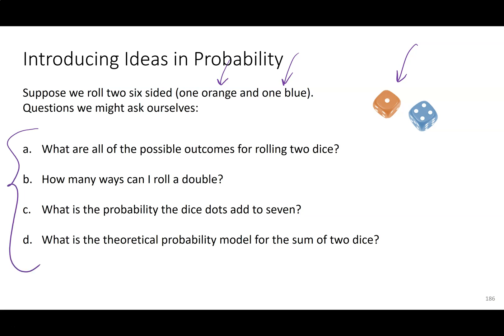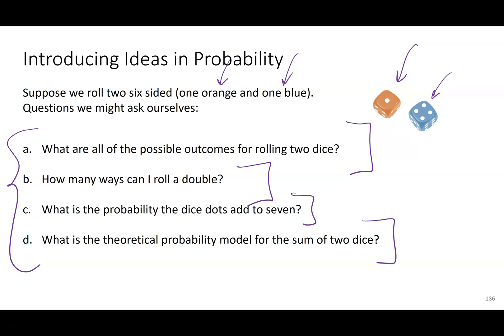An example of what we might ask — hopefully at the end of these lessons this week you can answer: What are the possible outcomes from these two dice? How many different ways can I roll a double? For example, if I roll a one and a one, that's a double. What's the probability that the dots add to seven? And what is the theoretical probability model for the sum of two dice?